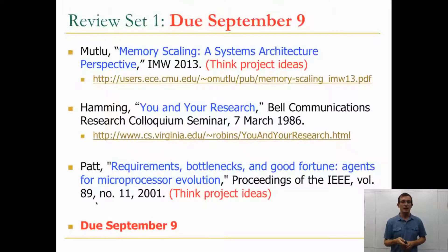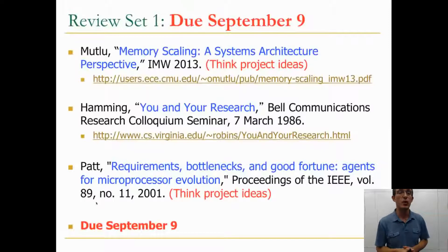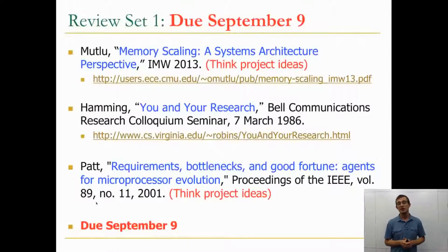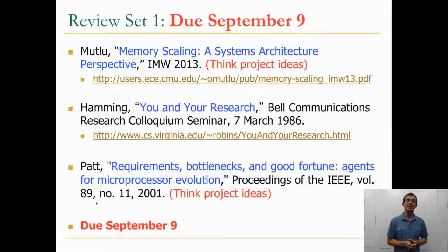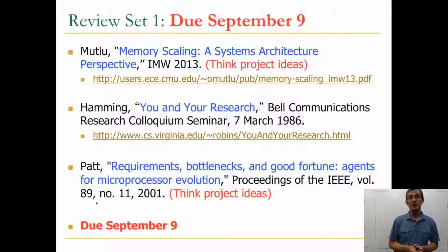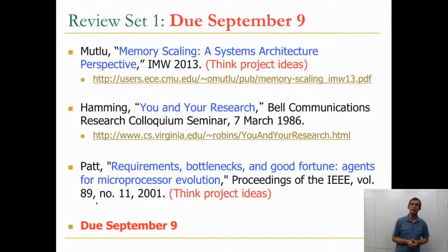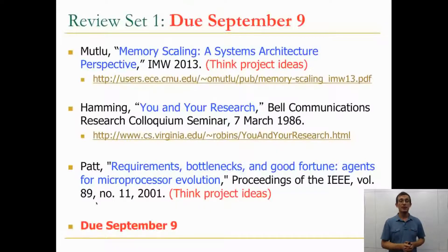The last paper is from Yale Patt, called 'Requirements, Bottlenecks, and Good Fortune: Agents for Microprocessor Evolution,' written in 2001. It looks at how microprocessors evolved until then and discusses some potential future research directions. This is another paper that could lead you to some interesting project ideas, so I would like you to think toward that direction when doing the review.